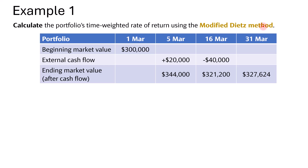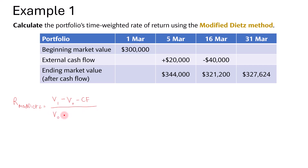Now let's first calculate the return using the modified dates method. For the formula, you will need to take the change in the market value at the end and the beginning of the month for March, then minus the total cash flow, and then divide by the initial value of the portfolio at the beginning of the month, plus the weighted cash flow. How do we calculate the weightage in this case?